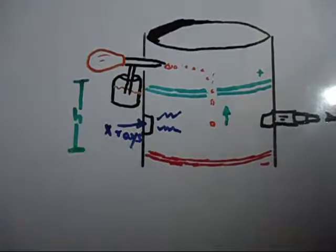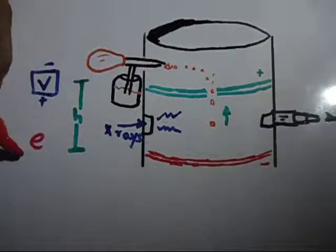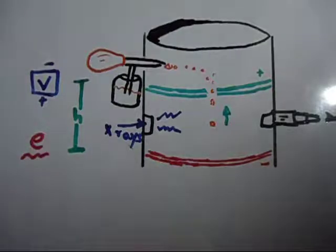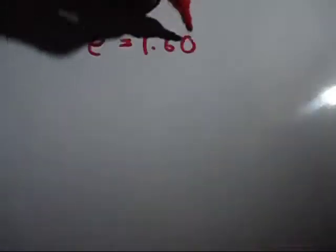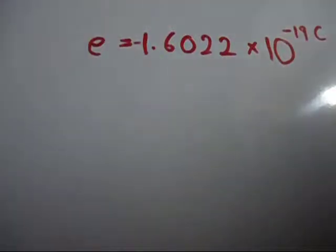Now, he measured the height and the rate of the falling droplets, and by varying the applied voltage to make the drop stationary, he found the charge on the oil droplets. This charge was always found to be an integral multiple of this number, 1.6022 into 10 to the power minus 19 coulombs. Of course, it was negative.